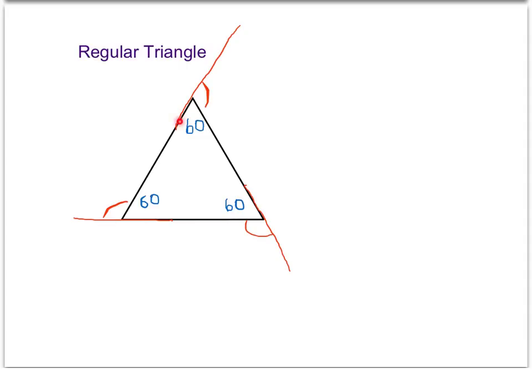Each interior and exterior angle form a straight line and therefore form linear pairs and are going to be supplementary. So we can find the measure of each exterior angle by subtracting the interior angle from 180 degrees. Therefore for a regular triangle, each exterior angle would equal 120 degrees.